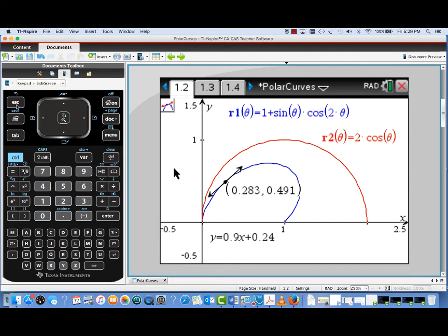Now what's really neat is this point on the curve is actually movable. And so if I grab that point and start moving it along the curve, notice that the coordinates are being updated as well as the equation for the tangent line.